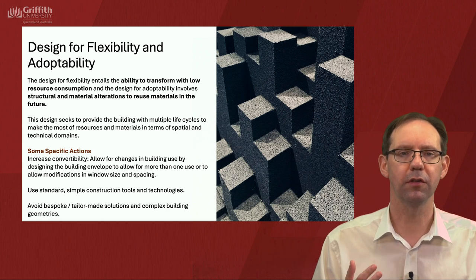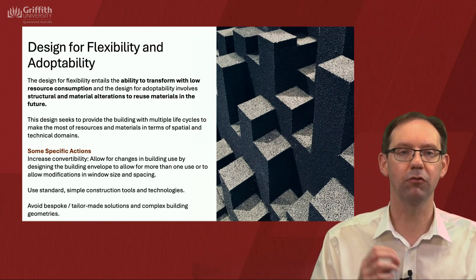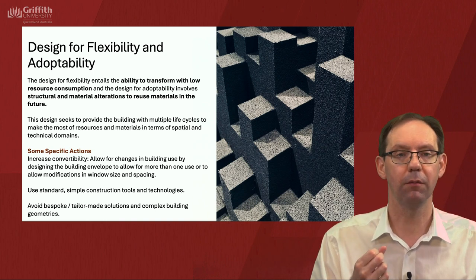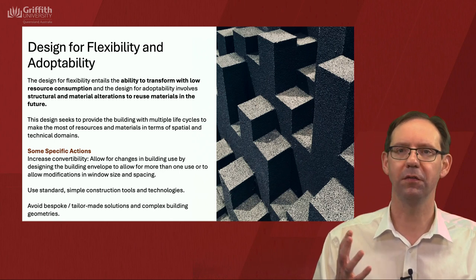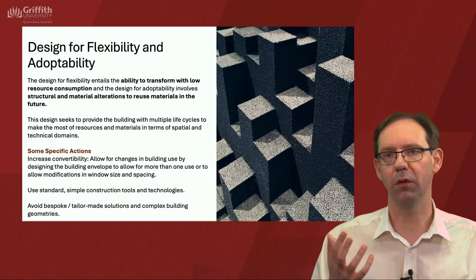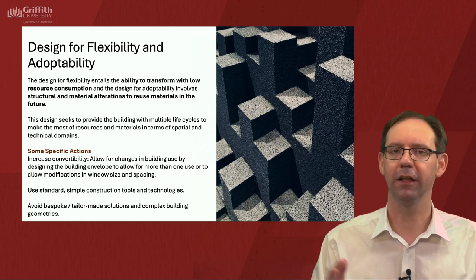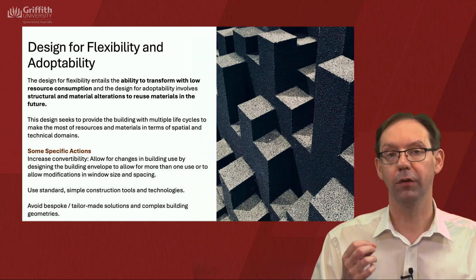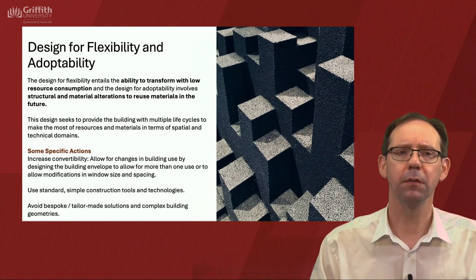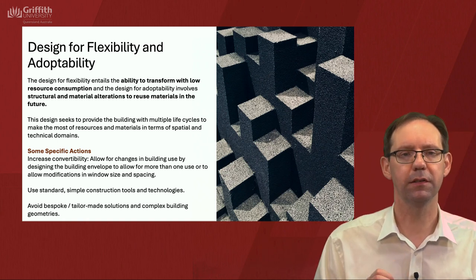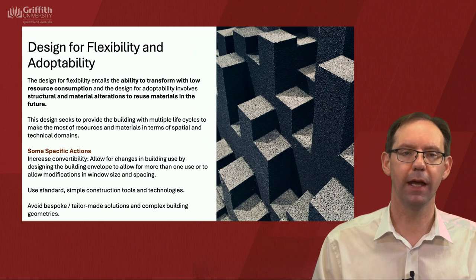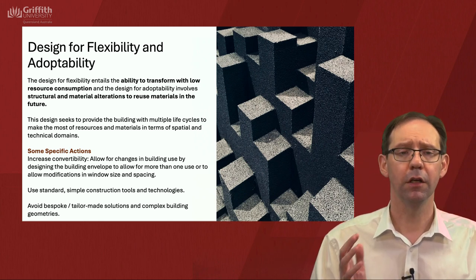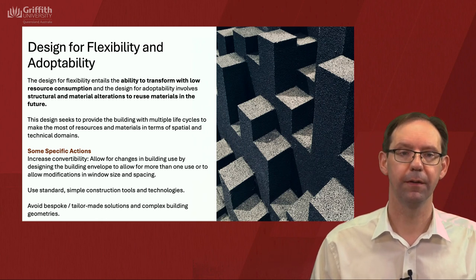The second strategy is design for flexibility and adaptability. Flexibility means the ability to transform a building with low resource consumption, while design for adaptability involves structural and material alterations to allow materials to be reused in the future. Buildings can have multiple life cycles. We're already seeing this with office buildings adapting to remote working and lecture rooms changing with online learning. Specific actions include increasing convertibility by designing the building envelope for more than one use, using standard simple construction tools and technologies, and avoiding bespoke solutions and complex building geometries.